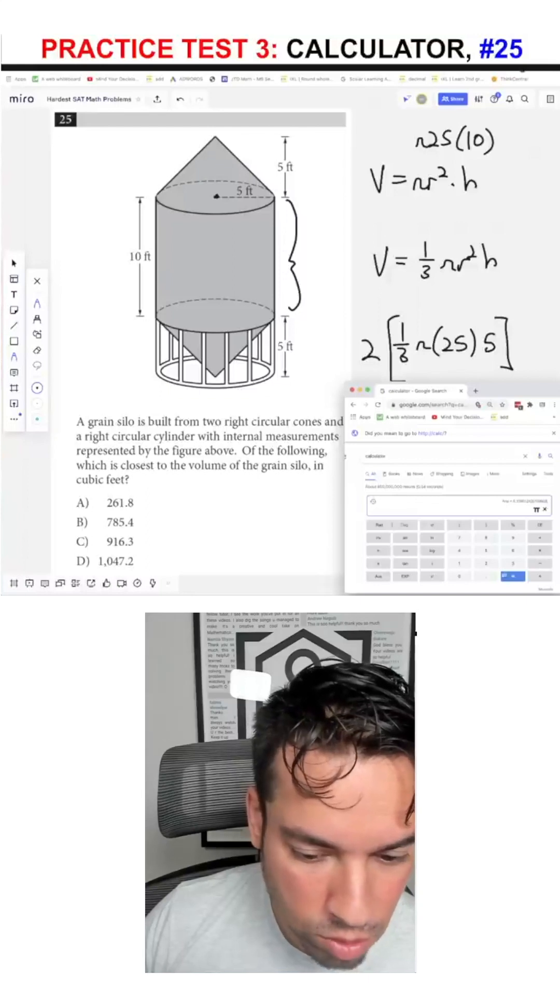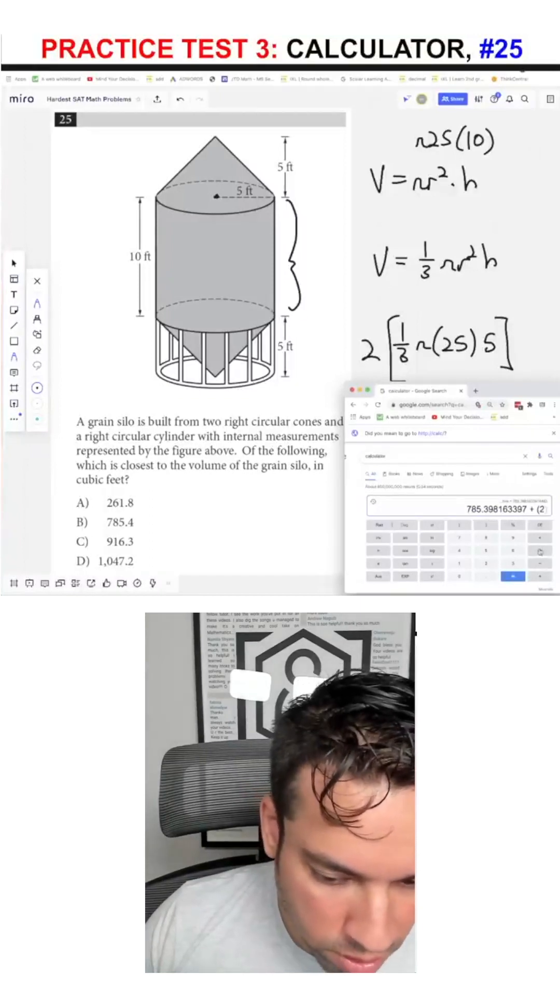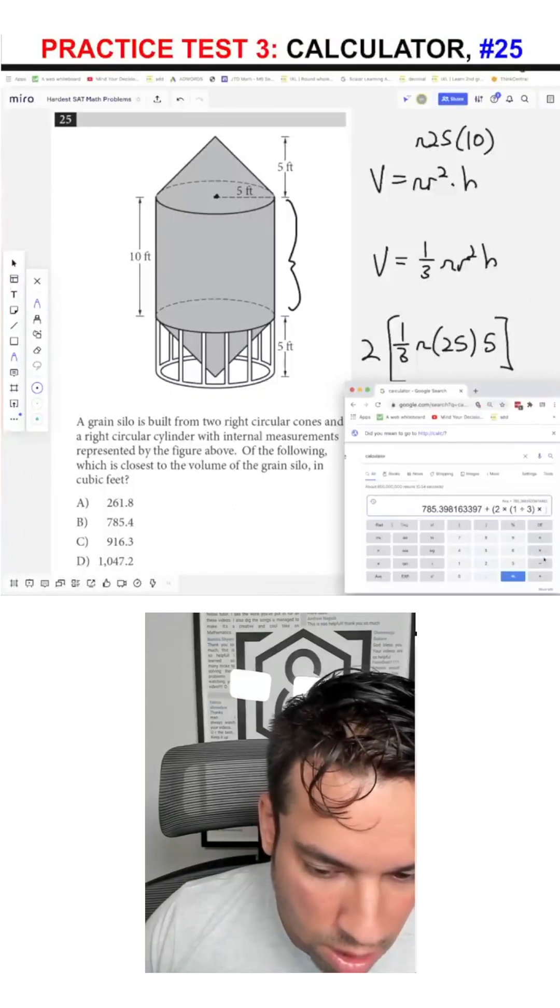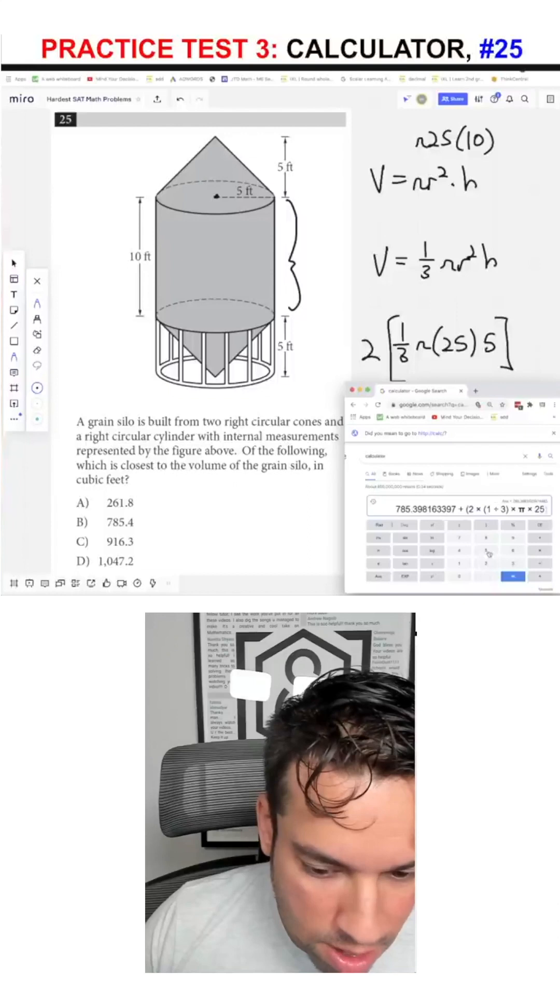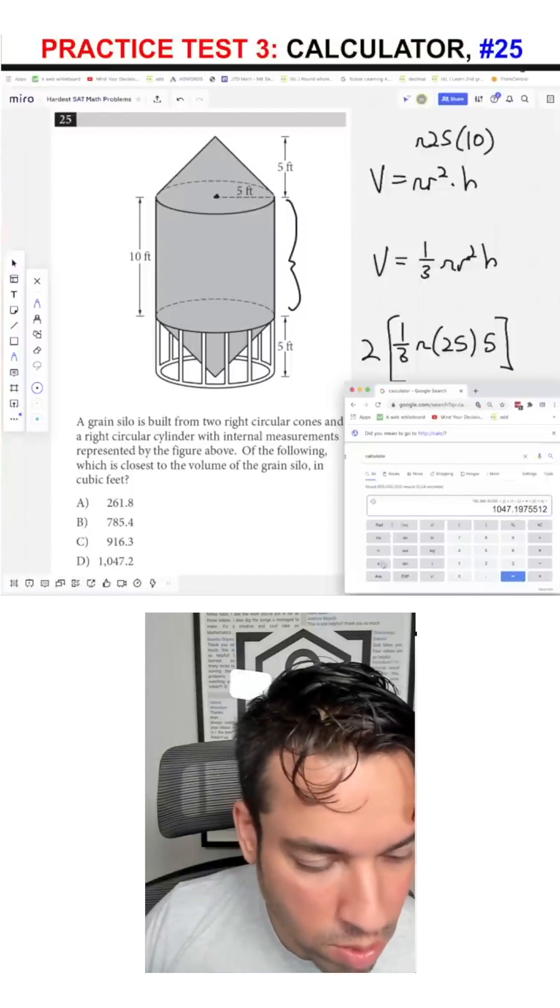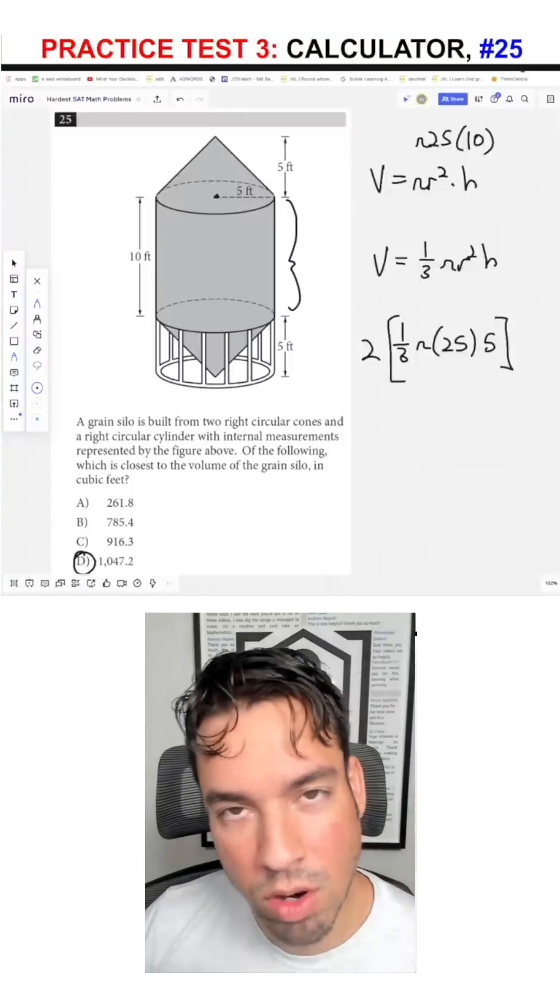Pi times 25 times 10 plus—and I'm going to be overcautious with the parentheses—2 times 1/3 times pi times 25 times 5 equals 1047.19, or as they rounded it, 1047.2. Your answer is D, and we are done.